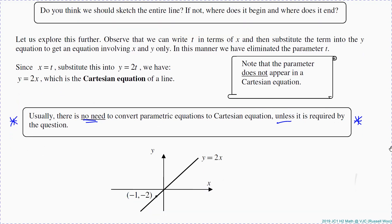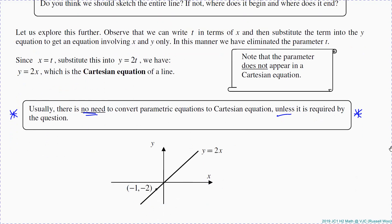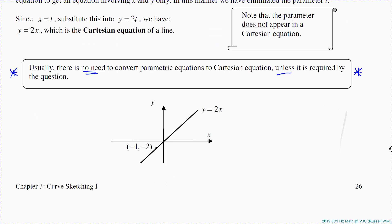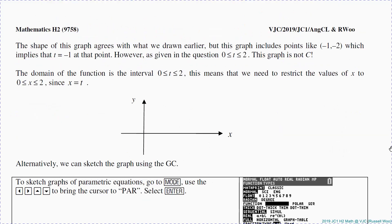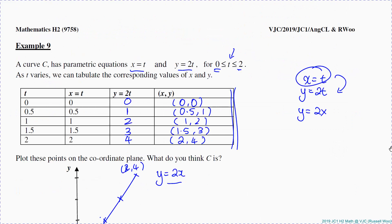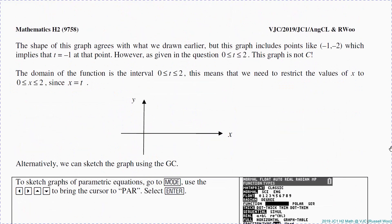What we want to say is if t is between 0 to 2, you just have to sketch this one from (0, 0) to (2, 4).